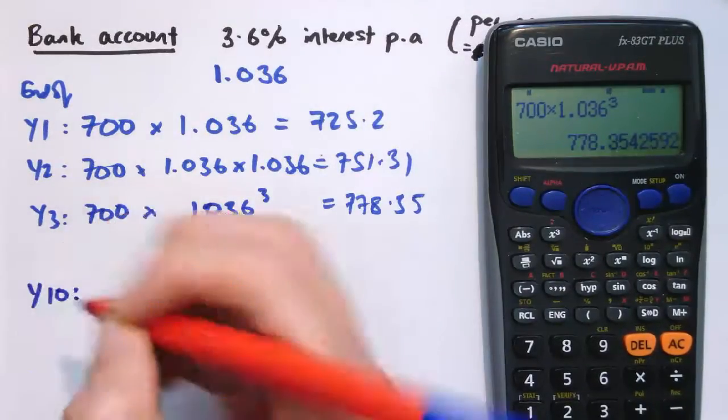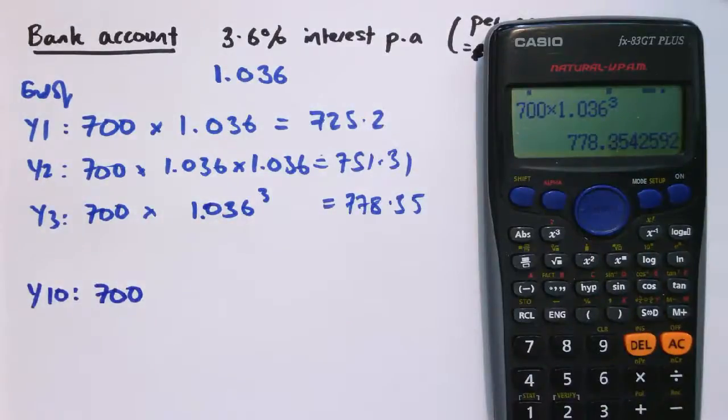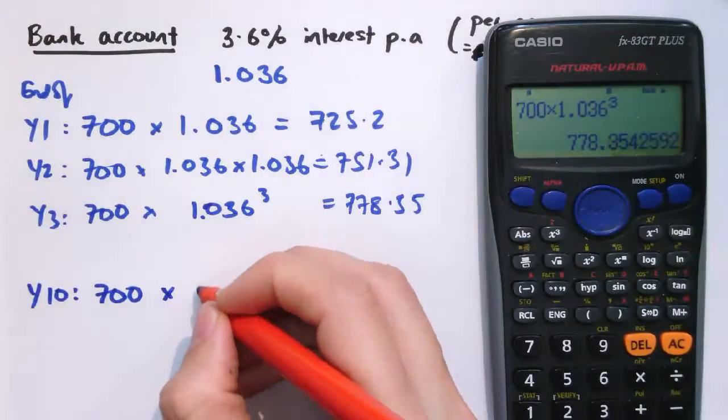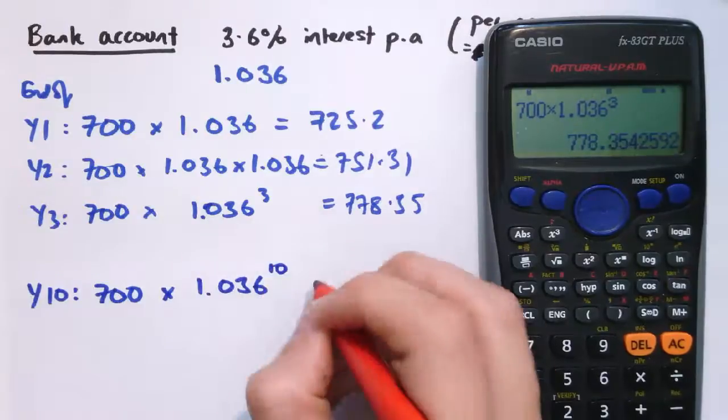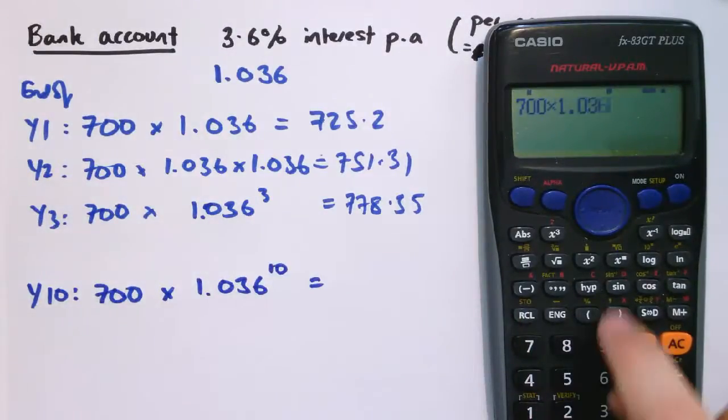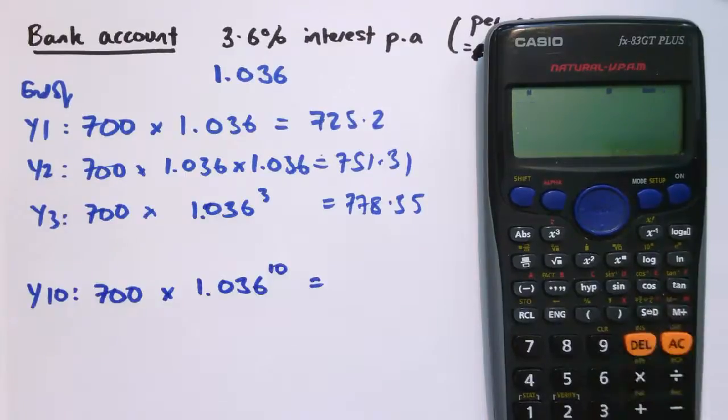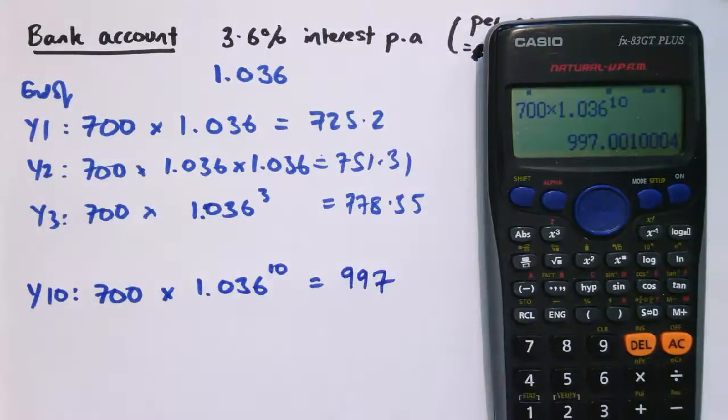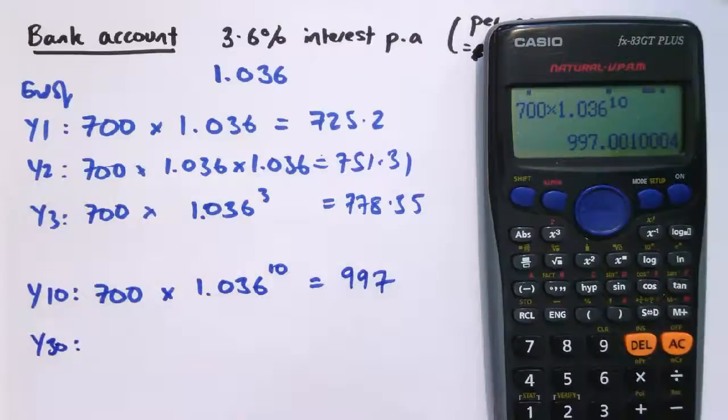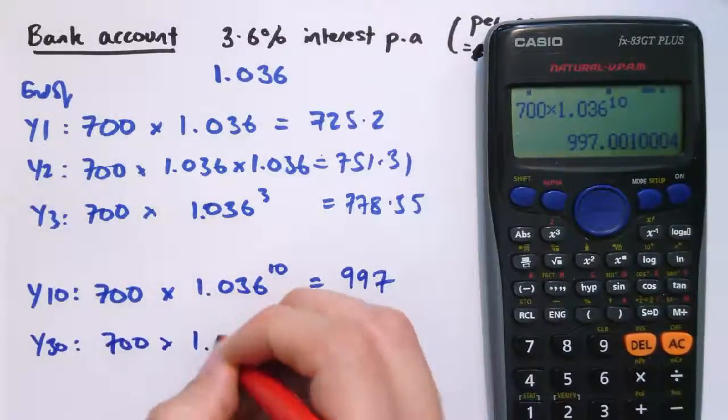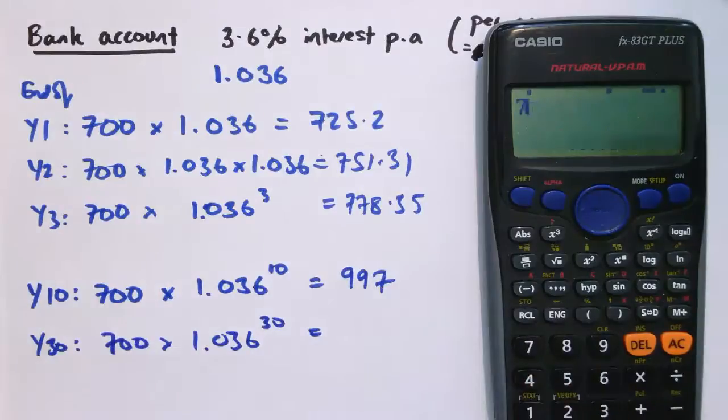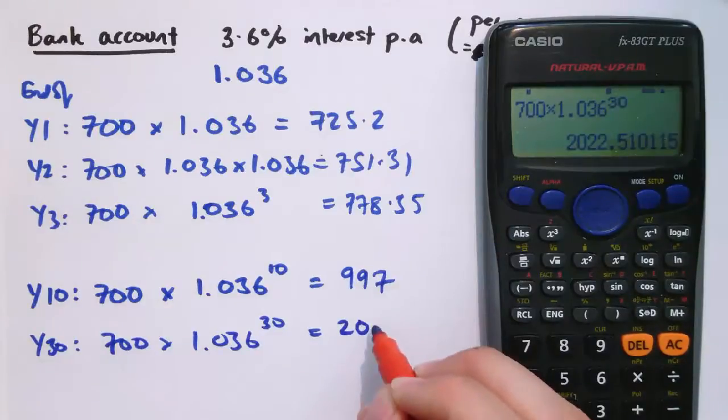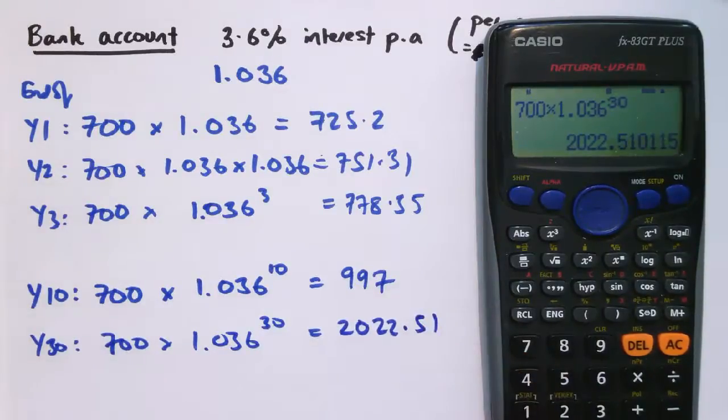So actually if I wanted to know what about at the end of year 10, rather than having to very laboriously keep repeating that scale factor over and over again, I'd just say I've got 700 pounds times 1.036 to the power of 10, which would give me approximately 997. And I could do that for any value I wanted. If I wanted to know how much money I've got after 30 years, 700 times 1.036 to the 30. Now I've got 2,022 pounds and 51 pence, and you can see how it racks up.